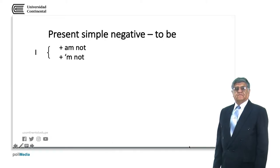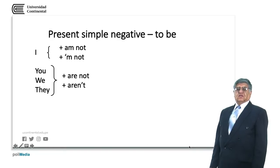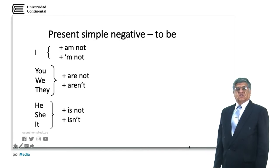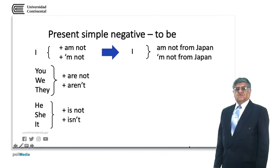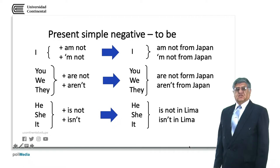'I am not' is the formal form in the negative. We need to add 'not' to the verb. 'I'm not' is the informal contraction. With 'you' and 'they': 'are not' or 'aren't' — as it is said in England, 'aren't'. And for 'he', 'she', or 'it': 'is not' or 'isn't'. Examples: 'I am not from Japan' or 'I'm not from Japan.' 'You/they are not from Japan' or 'aren't from Japan.' 'He/she/it is not in Lima' or 'isn't in Lima.'